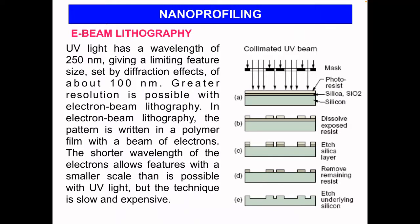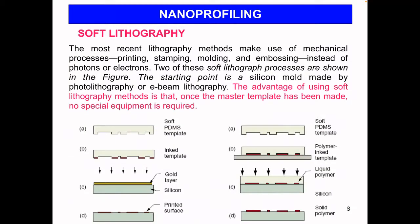In the process, the collimated UV beam hits your mask, you create your features, then clean with acidic solutions to get rid of the resist. At the end, you obtain your nano-featured surface by these lithography techniques. The third well-known approach is called soft lithography.